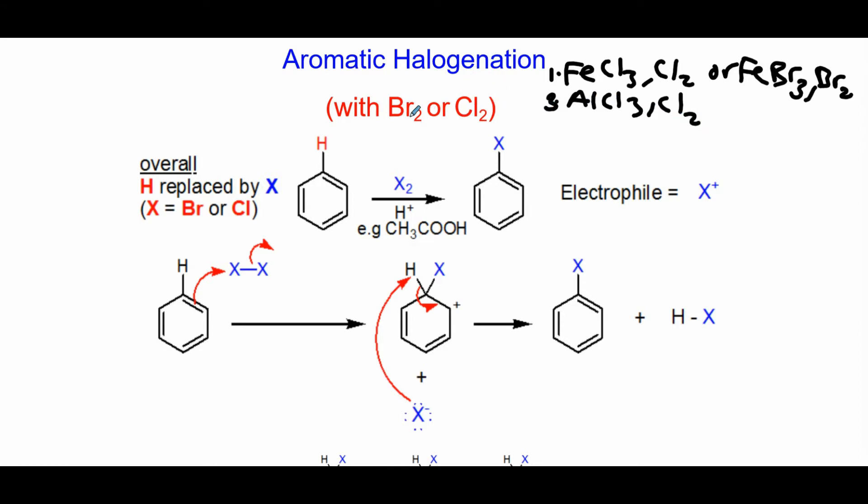We're going to do bromination or chlorination using a different set of reaction conditions. Here we are not using a Lewis acid, instead you are using acetic acid.